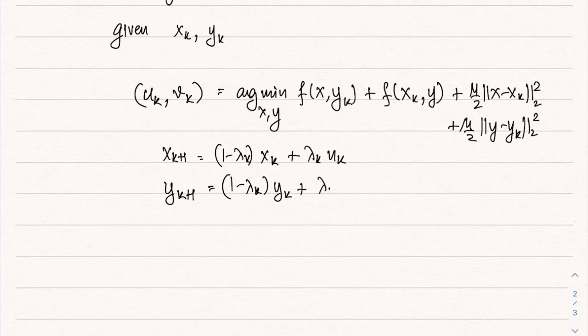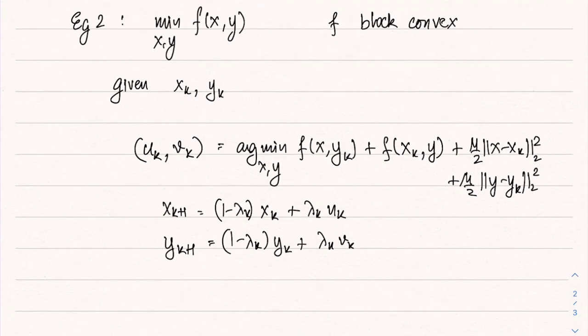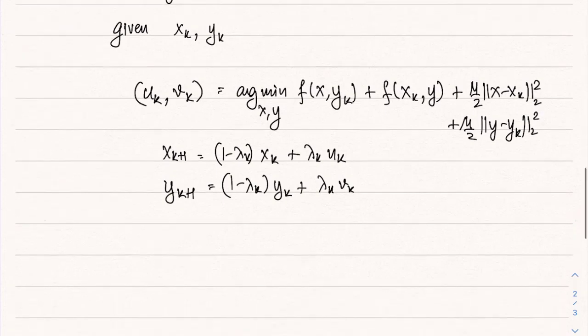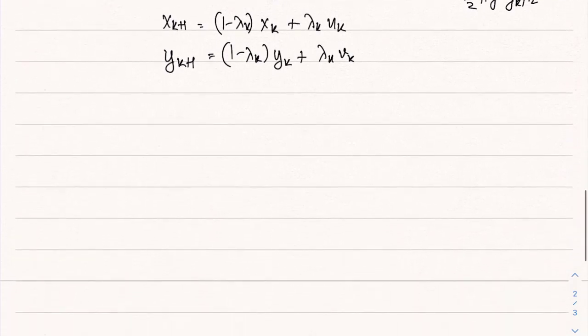Then x_{k+1} is a convex combination of x_k and u_k, and y_{k+1} is a convex combination of y_k and v_k. Note that here both SCA and alternating minimization are applicable — both are competing methods, and which performs better depends on the specific problem.